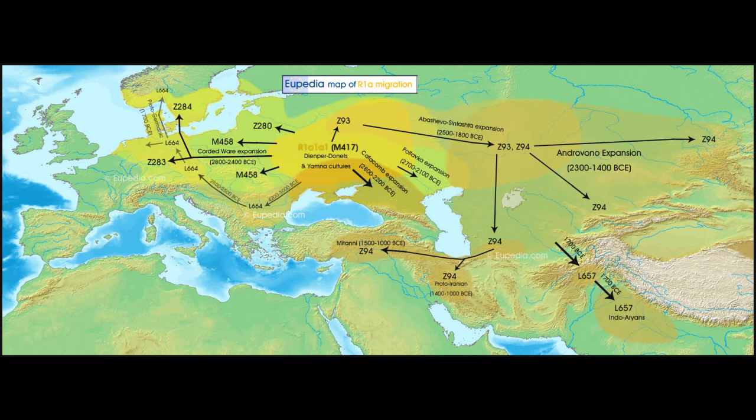Z284 is the one responsible for forming the precursor of the Nordic Bronze Age, which is important in founding Germanic culture. And we also have the L664 branch, which is another one that participates in the formation of Germanic culture. The Corded Ware culture is the source of this expansion into Europe — a very interesting culture, also called the Battleaxe culture or the Botaxe culture.